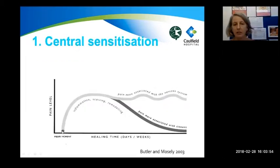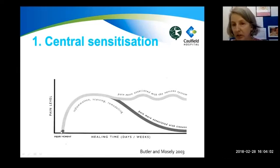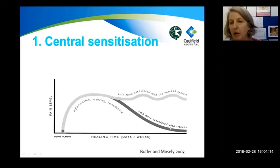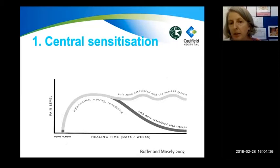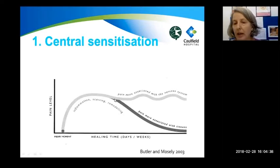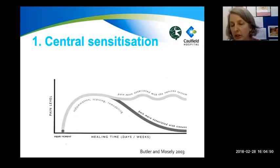In this slide on central sensitization, the injury triggers the nociceptor or the alarm or danger system — terms we often use with clients. Eventually the brain produces pain, and normal tissue healing occurs usually within three months. In the cohort of patients, for predisposing reasons and psychosocial issues around the time of the injury, the pain persists and the nervous system stays sensitive and doesn't calm down to the level before the injury. Sometimes there's not an injury — such as with migraine or fibromyalgia — where people already have a sensitive nervous system which eventually triggers a pain response.